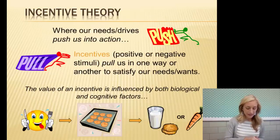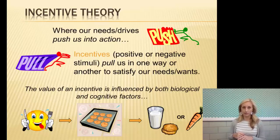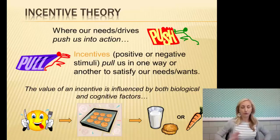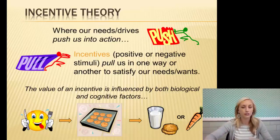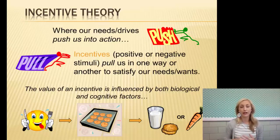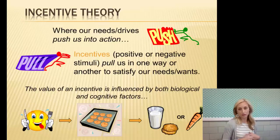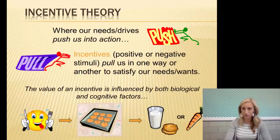Incentive theory states that behavior is directed toward attaining desirable stimuli and avoiding unwanted stimuli. Where needs and drives push us into action from within, incentives pull us from outside. An incentive is a positive or negative stimulus outside of you that pulls you in one direction or another to satisfy your needs and wants. For example, a yummy cookie if you do your chores — that pulls you toward the cookie. The value of an incentive is influenced by both biological and cognitive factors.